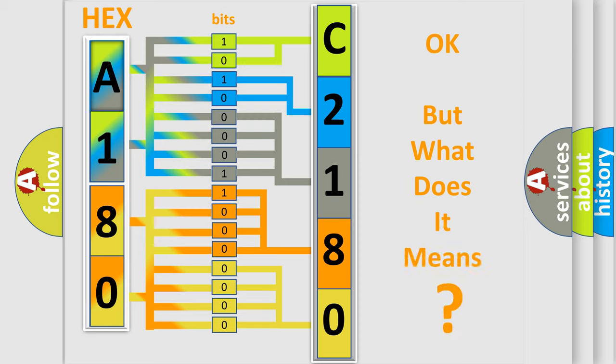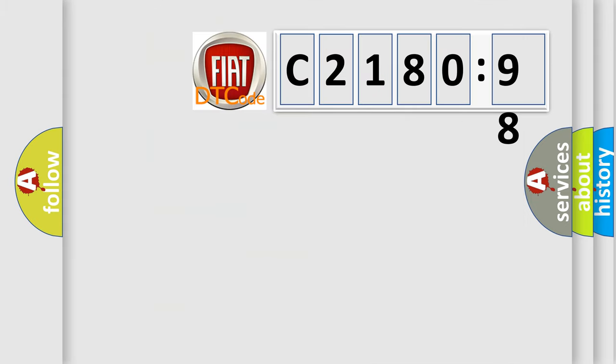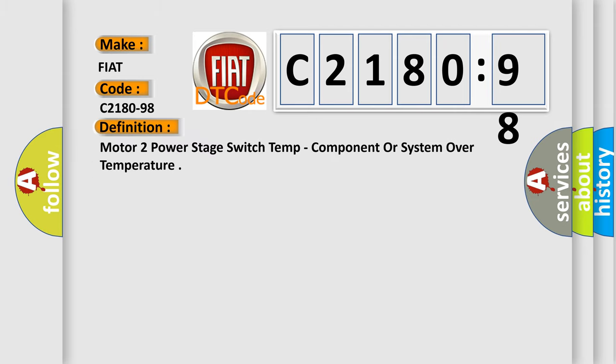We now know in what way the diagnostic tool translates the received information into a more comprehensible format. The number itself does not make sense to us if we cannot assign information about it to what it actually expresses. So, what does the diagnostic trouble code C2180-98 interpret specifically for Fiat car manufacturers?